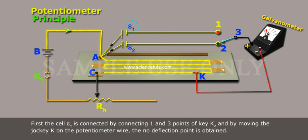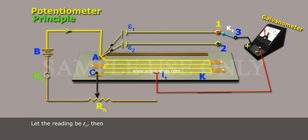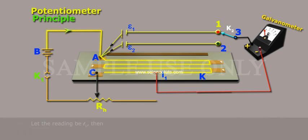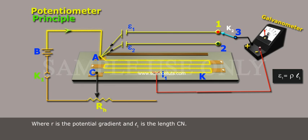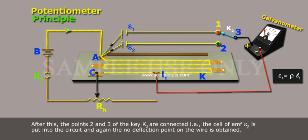First, the cell is connected by connecting one and three points of key K2 and by moving the jockey K on the potentiometer wire. The no deflection point is obtained. Let the reading be L1, then Epsilon-1 equals to rho L1, where R is the potential gradient and L1 is the length Cn.